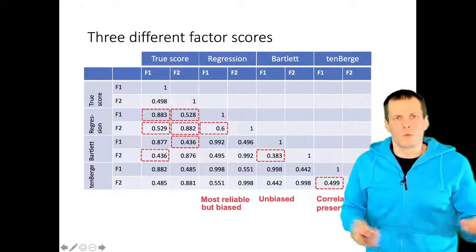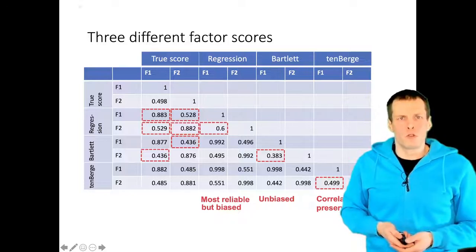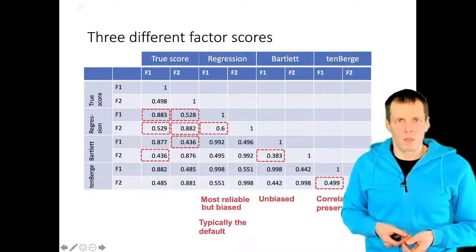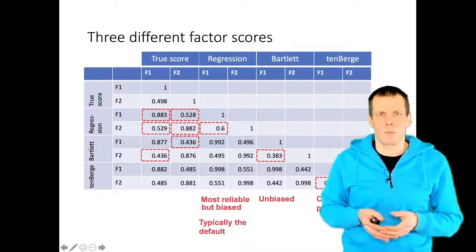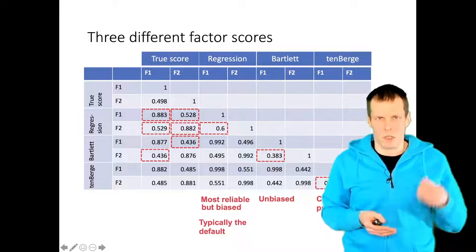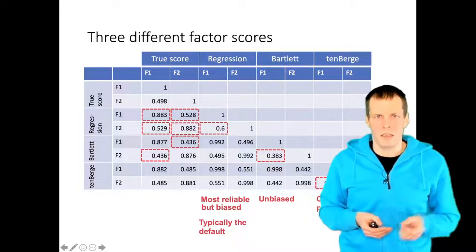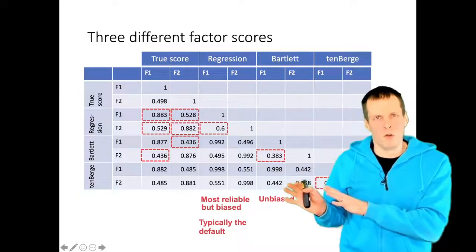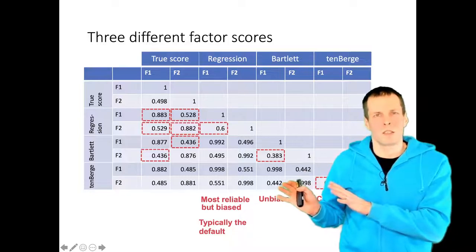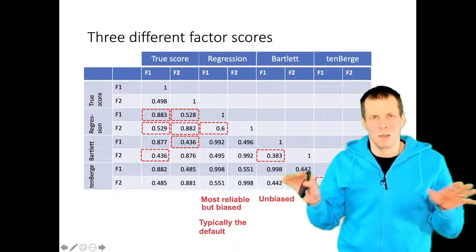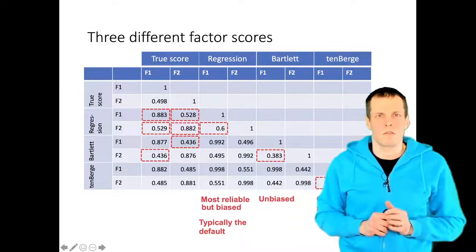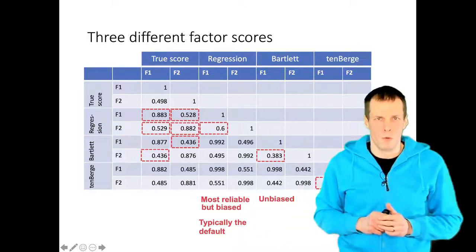So which one should you use? The regression score is typically the default and makes sense if the purpose is to rank-order cases. But if the purpose is to test whether the factors are correlated, regression scores are probably the worst choice.